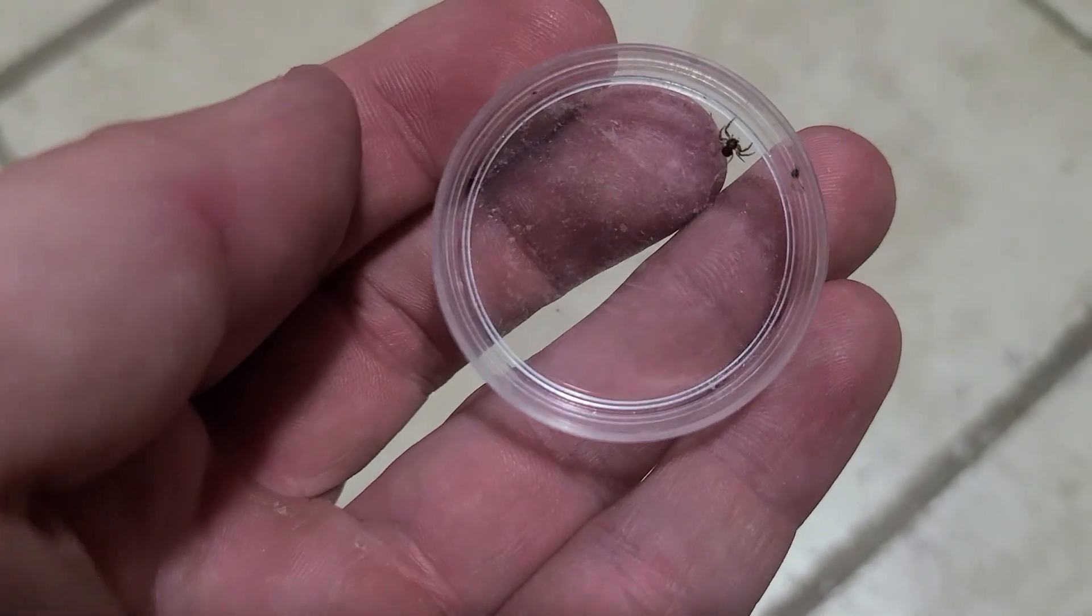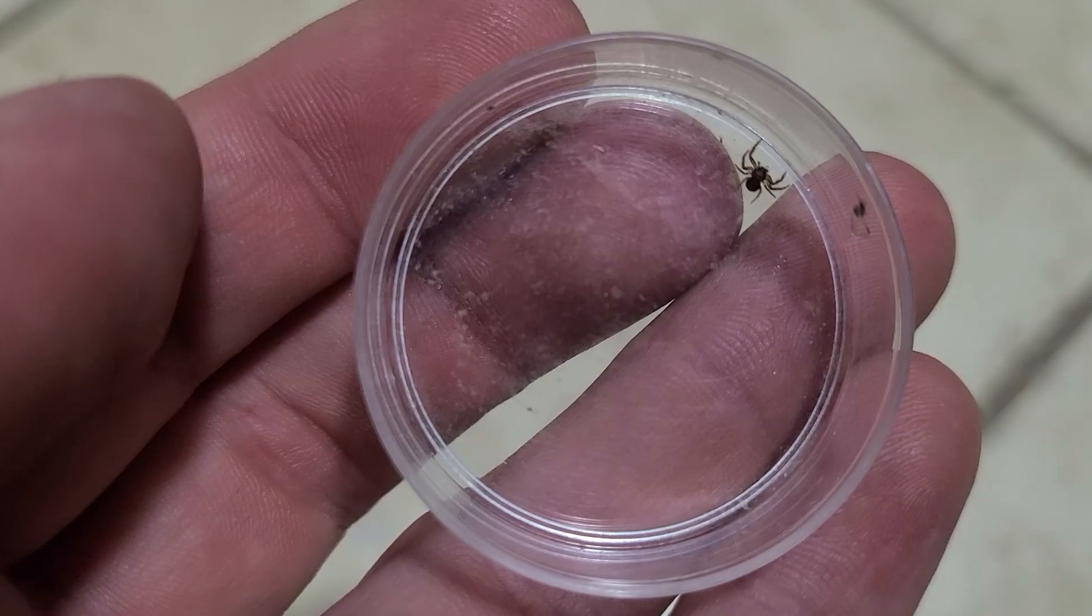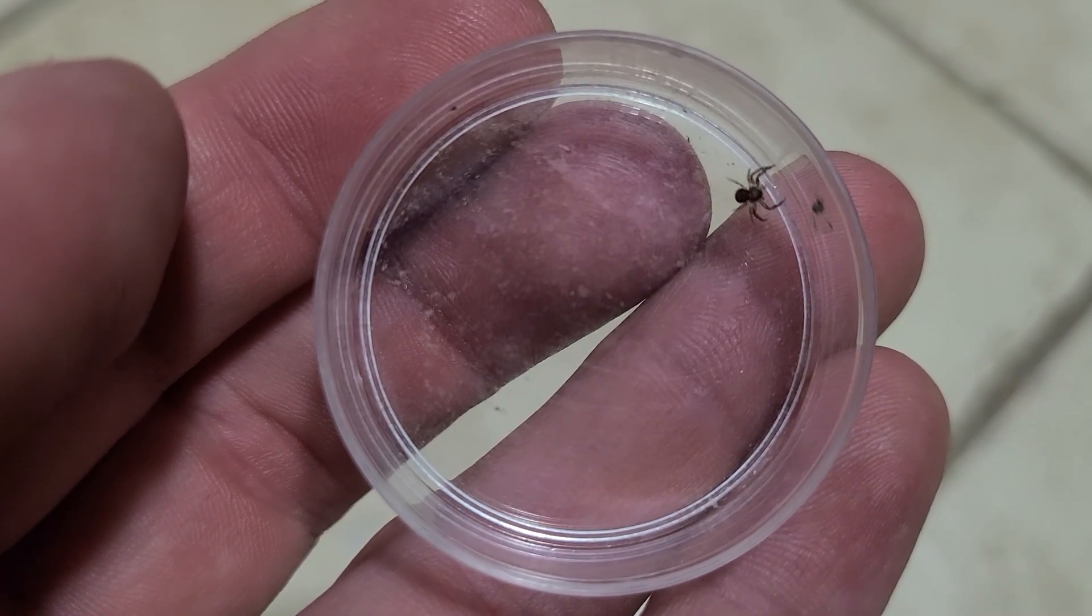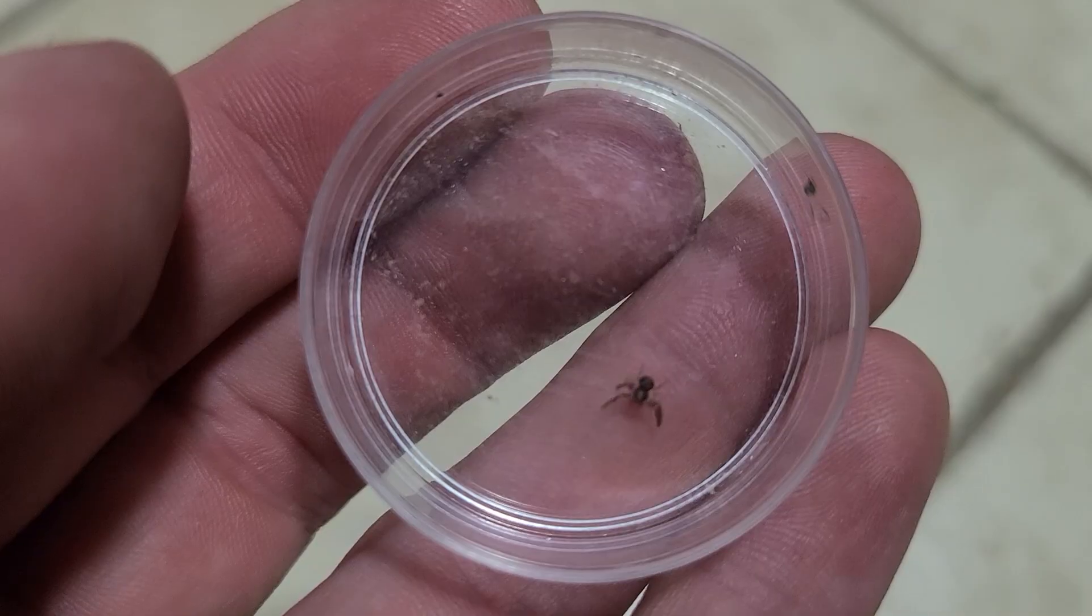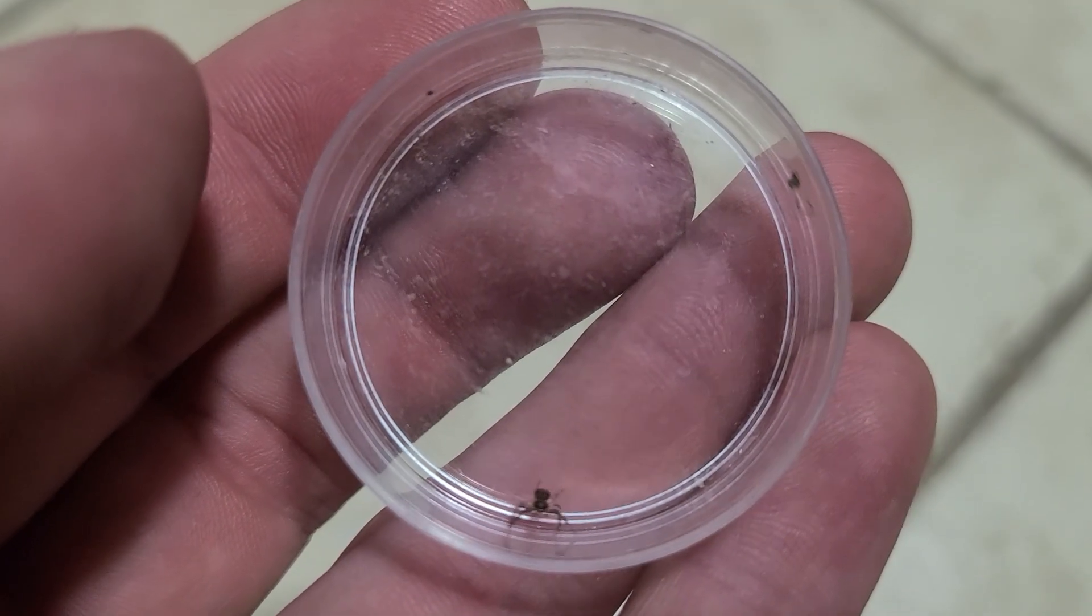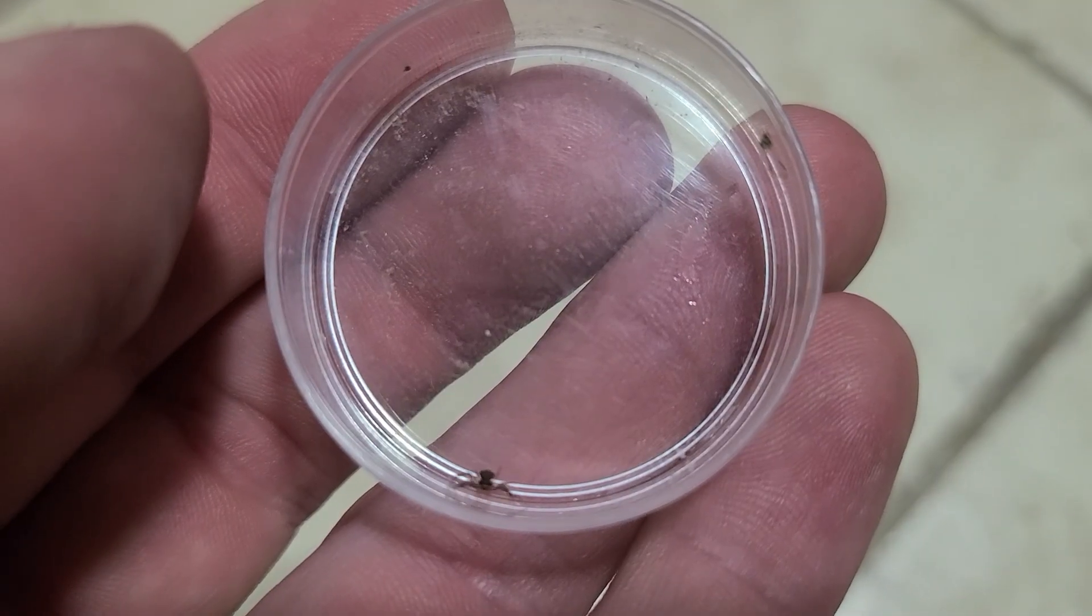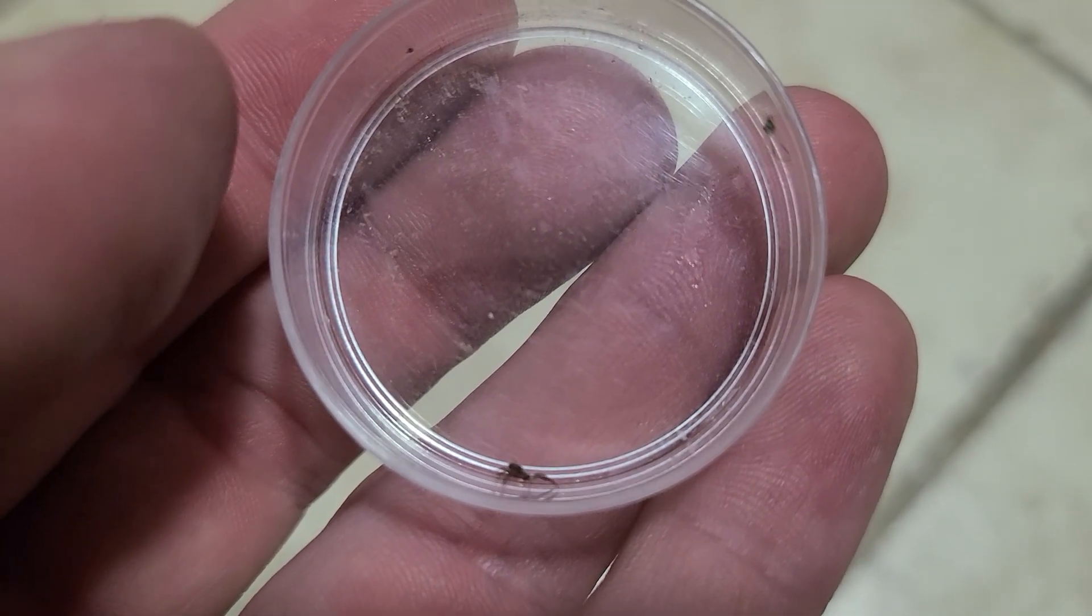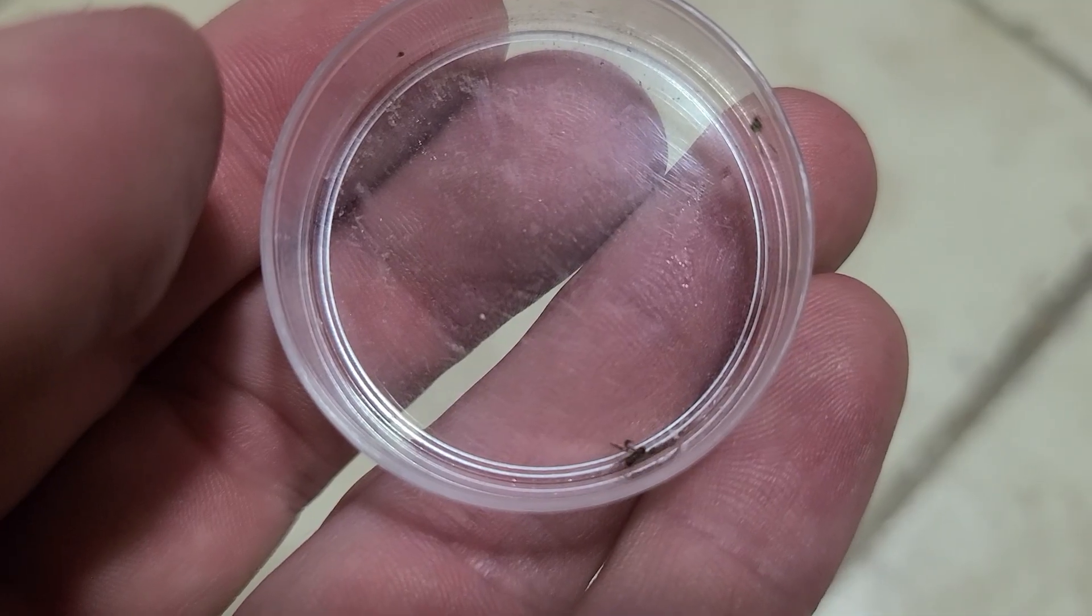Today we're going to be looking at a very unique spider. It's not a rare spider, but it is quite unique, and that is a crab spider. These guys are unique in the way that when you first see them, you'll see them walking sideways or backwards, which most spiders don't do, and that's what gives them the name of the crab spider.